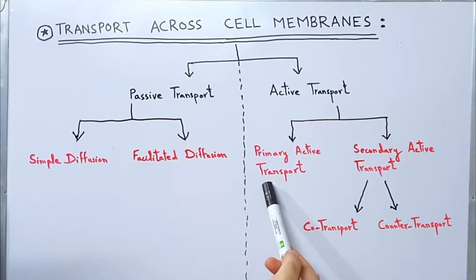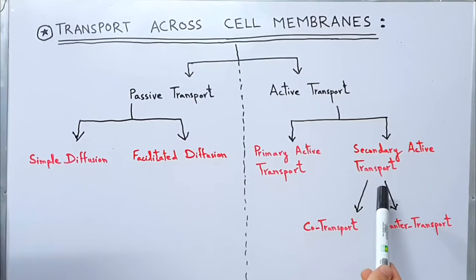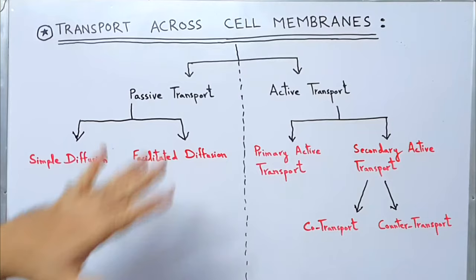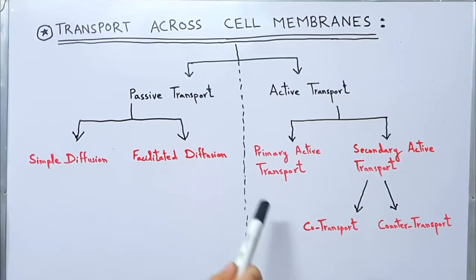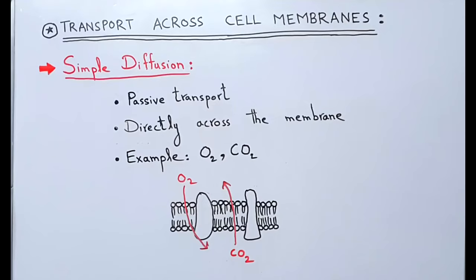There are two types of active transports: primary active transport and secondary active transport. Secondary active transport is further of two types: co-transport and counter transport. This is the basic division of passive and active transport, and we will now see individual transports in detail with examples.